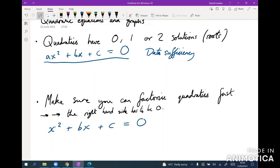The first thing to mention is that quadratics have 0, 1, or 2 solutions, which are also called roots. By quadratic in general, we mean an equation in this form—that being the canonical form where you make the right side equal to zero. That's very important. The reason I've made this the first point is that for data sufficiency, 0, 1, or 2 solutions is very important.